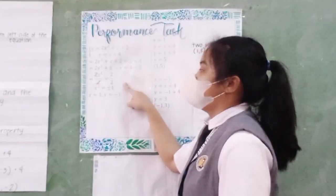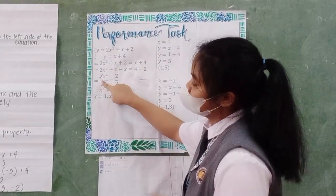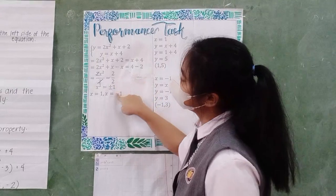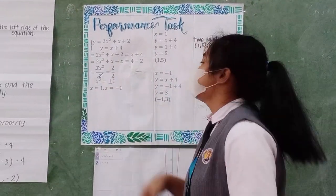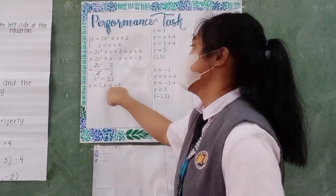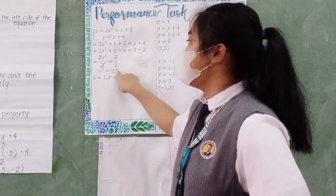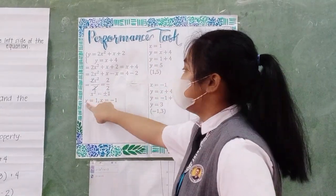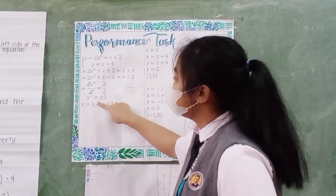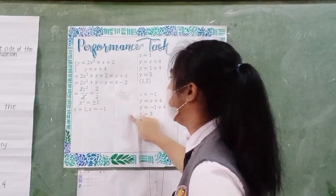To find the value of x, we have to divide both sides by 2. So that would become x² equals 1. To find the value of x, we have to find the square root of 1. And the answer for that is x equals 1 and x equals -1.